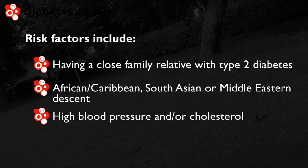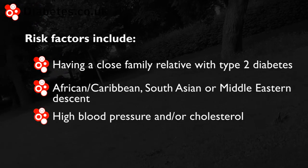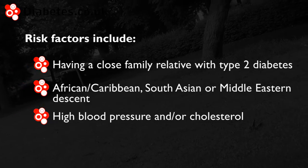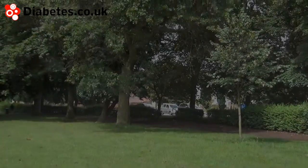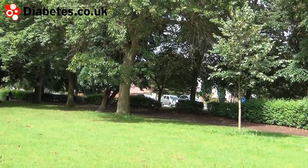Type 2 diabetes can be treated with diet and exercise alone, or with tablets, insulin, or other injectable medication. The symptoms of type 2 diabetes come on slowly and may take months or even years to appear.